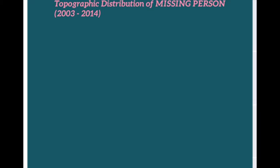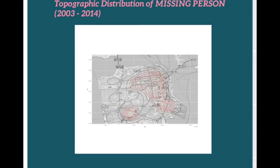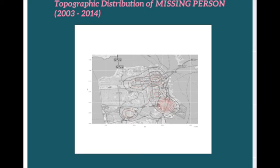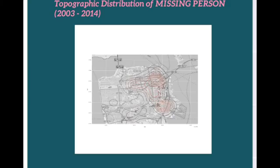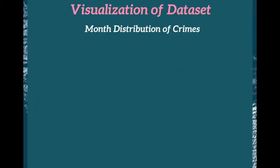The second example is for missing persons. We can see that the crime locations have a wide geographic range, and it seems that missing persons most often occur in three specific neighborhoods.